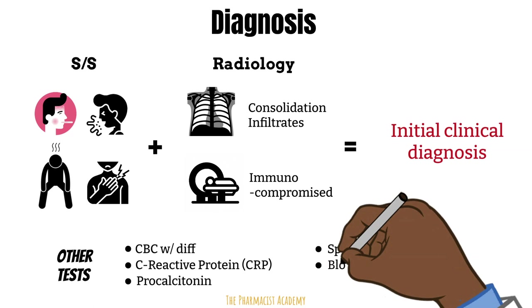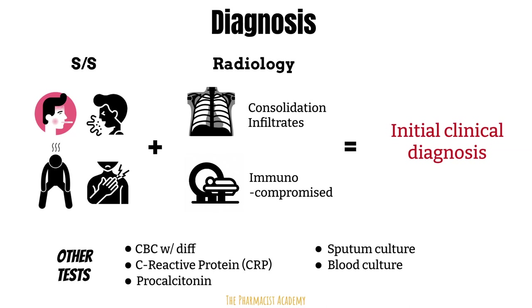Testing for the specific pathogen should be based on the severity of the pneumonia, the site of care — inpatient or outpatient — and timing of the results. For a patient with a mild form of community-acquired pneumonia being treated outpatient, there's no need to test for the pathogen, as empiric therapy has been proven successful and knowledge of the pathogen does not usually improve outcomes. For a patient with HAP, VAP, or even a patient admitted to the hospital for CAP, we would consider checking sputum or blood cultures before treatment. Best practice is to obtain these collections before treatment for more accurate results, and treatment can begin while results are pending.